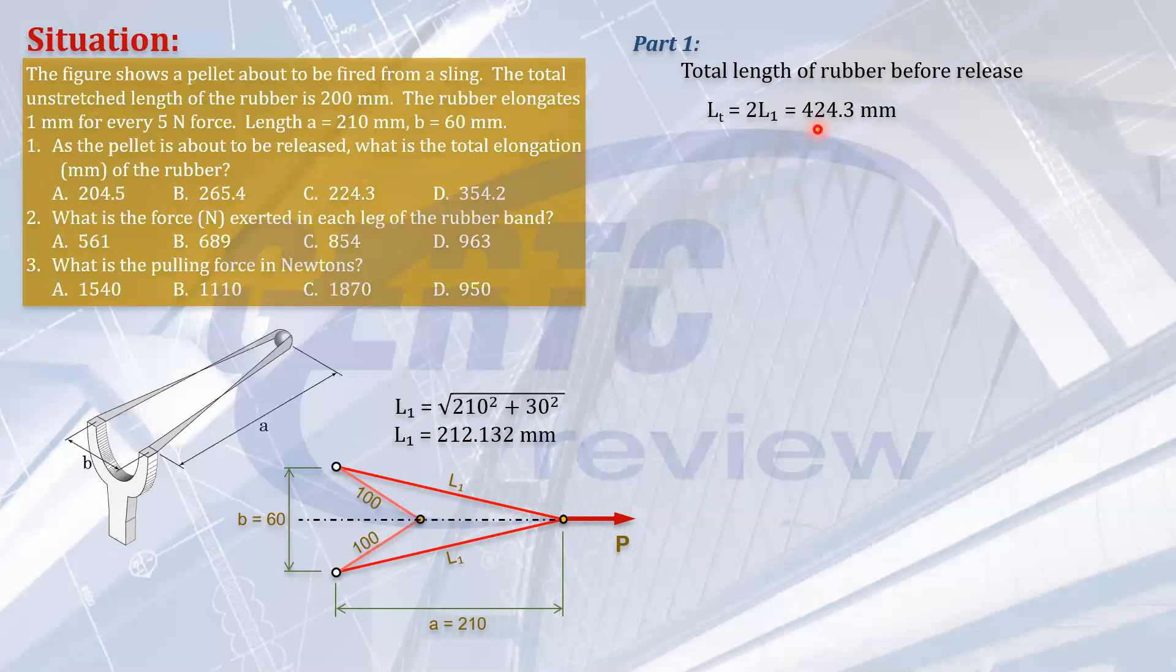So the elongation is 424 minus the original length, which is 200 mm. 424 minus 200, that will be 224.3 mm. The answer is letter C. So I hope you got it correct.